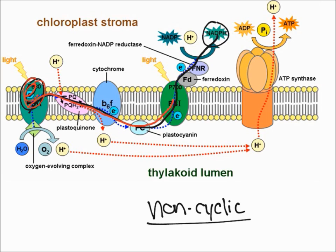In cyclic photophosphorylation, an electron moves from Photosystem 2 through the chain to Photosystem 1, but if there is already a lot of NADPH present, the electron simply moves back to Photosystem 1 and the whole process repeats, essentially just making more hydrogens and as a result more ATP.